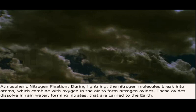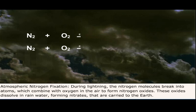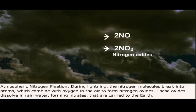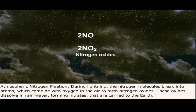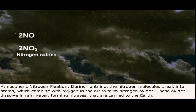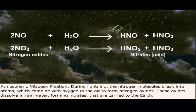The atmospheric free nitrogen can be fixed in a number of ways. First, we'll talk about atmospheric nitrogen fixation. During lightning, the nitrogen molecules break into atoms, which combine with oxygen in the air to form nitrogen oxides. These oxides dissolve in rainwater, forming nitrates that are carried to the earth.